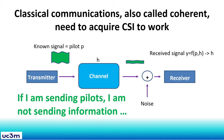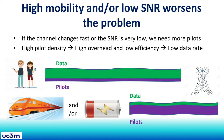This problem worsens in high mobility and/or low SNR scenarios. We either have to estimate the channel many times to track the channel variations in high mobility scenarios, or we have to estimate the channel many times to average the estimation in low SNR scenarios. If we have a high pilot density, then we have a high overhead and low efficiency, which results in a low data rate.